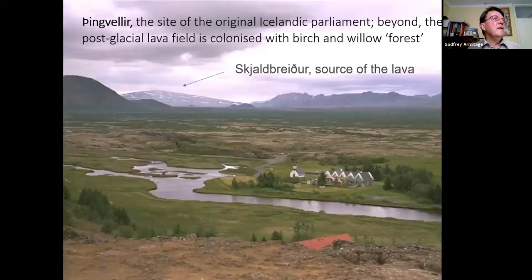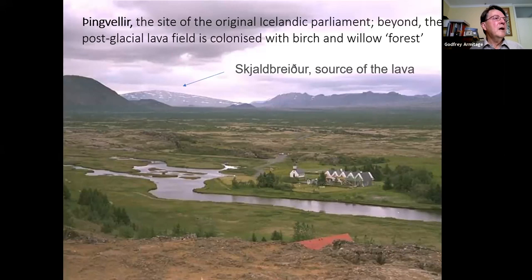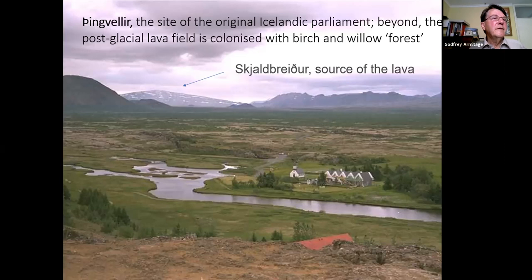Such as this Moroccan trilobite. The idea that nature is in a state of balance to which it will return when a disturbing influence is removed can no longer be uncritically accepted — change can be short-term or long-term. This is a picture of Þingvellir, the site of the original Icelandic parliament. Beyond the post-glacial lava fields, it's colonised with birch and willow forest. We can see Skjaldbreiður, which is the source of the lava that erupted between one and ten thousand years ago. We're familiar with short-term ecological change — this process is known as succession — it can occur when a completely new habitat is formed, for example following a lava flow.